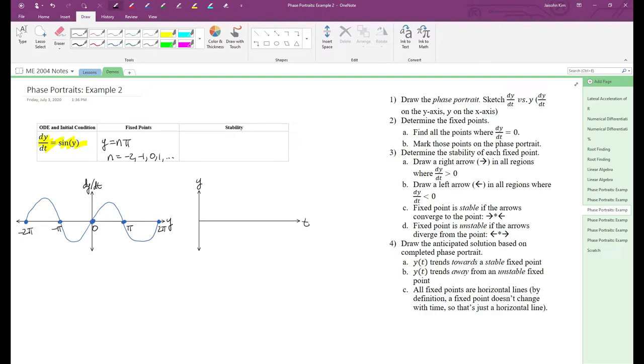Now we want to determine the stability of each fixed point. We draw right arrows in regions where dy/dt is positive and left arrows in regions where dy/dt is negative.